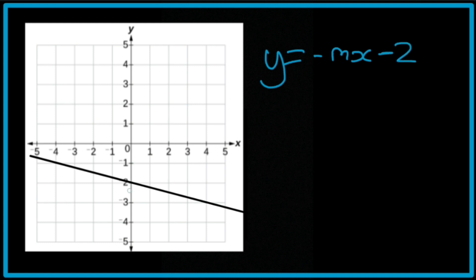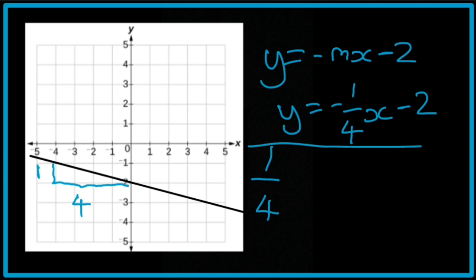Now find the gradient. So it's 1, 2, 3, 4 along and 1 up. So it's 1 over 4. So it's going to be y equals negative 1 over 4x minus 2. That's the final answer.